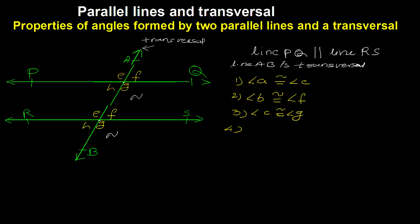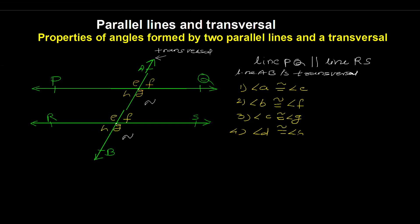These four pairs of angles are corresponding angles because the arms on the transversal of the pairs of angles are in the same direction and the other arms are on the same side of the transversal. These pairs of angles are called pairs of corresponding angles.